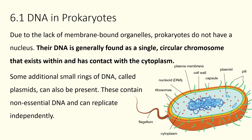The first way we find DNA in cells is within prokaryotic organisms. Prokaryotic — prokaryon, before the nucleus — so they have no nucleus and no membrane-bound organelles whatsoever. Their DNA is generally found as a single circular chromosome that exists within the cytoplasm. We can also find some small additional rings of DNA called plasmids, which will come in handy when we look at gene transformations later in the term. Long story short, prokaryotes have DNA that exists as just one circular chromosome within their cytoplasm.